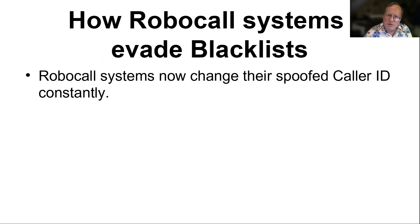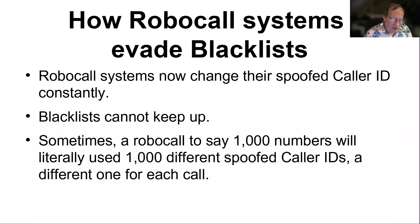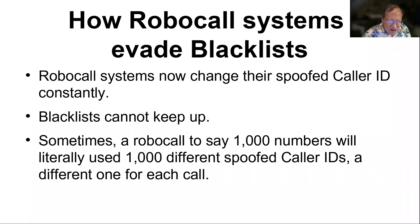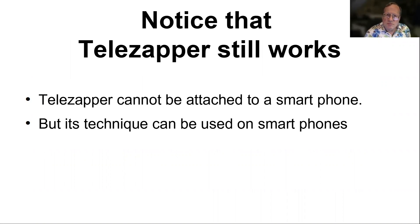To summarize what we've learned: robocall systems now change their spoofed caller ID constantly. Blacklists simply can't keep up, and in many cases what they're blacklisting turns out to be the number of a real human being. A robocall system is set up to call many different numbers at the same time — suppose they call a thousand numbers. These days they literally use a thousand different spoofed caller IDs so that even a report to the FTC doesn't allow them to establish that all the calls originated from the same place. But Telezapper still works — although it cannot be attached to a smartphone, its technique of playing Special Information Tones convinces robocall systems that the number they called is no longer in service.